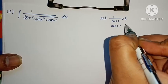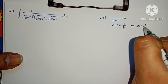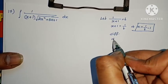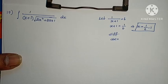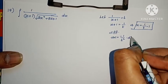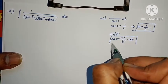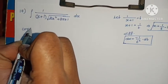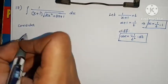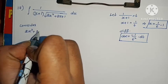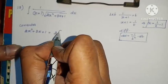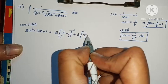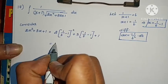For the next problem, let x plus 1 equals 1 by t, so x equals 1 by t minus 1. Differentiating on both sides: dx equals minus 1 by t squared into dt. The root value is expressed in terms of t and x equals 1 by t minus 1 is substituted into 2x squared plus 3x plus 1.